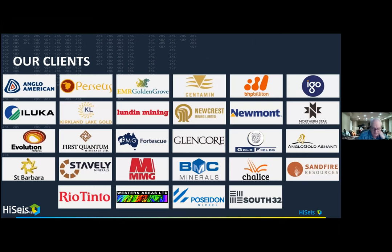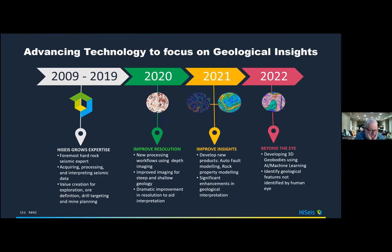HiSeis originated out of Curtin University around 2010, spawned from hard rock seismic study and research as a commercial entity. For about 10 years the company grew organically, shooting, processing, and interpreting seismic. About two years ago, coinciding with the start of COVID, there was a change in management with a real focus on the product side rather than acquisition — improving the products and the resolution of the seismic we deliver.